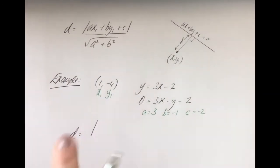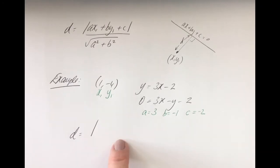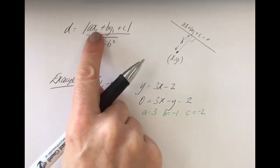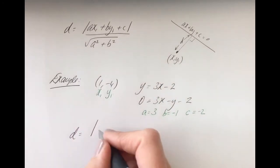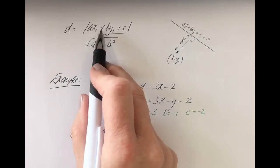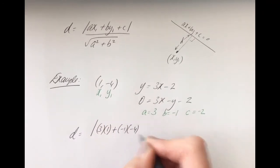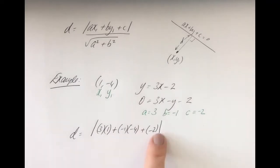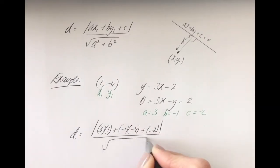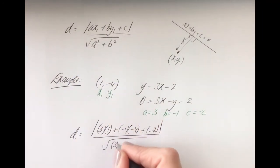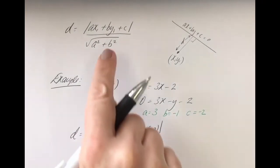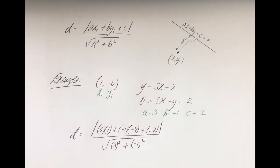D equals — now keep your modulus lines. A lot of pupils often forget these lines when filling in the formula, so please be very careful. You're going to get a lot of marks by just filling in the formula correctly, but you must have all aspects of the formula. So: a times x1 — x1 is 1 — plus b times y1, so b is minus 1 times y1 which is minus 4, plus c which is minus 2, and close that modulus sign. On the bottom you have the square root of a squared — which is 3 squared — plus b squared — which is minus 1 squared.